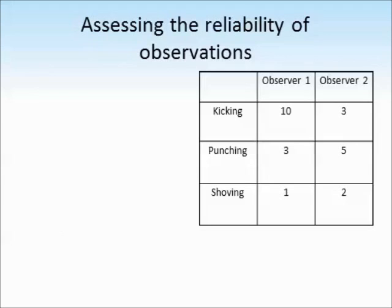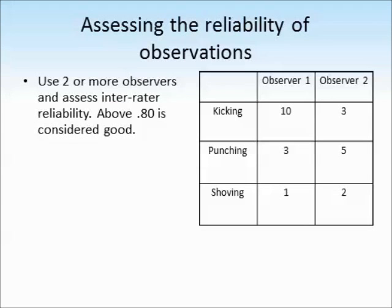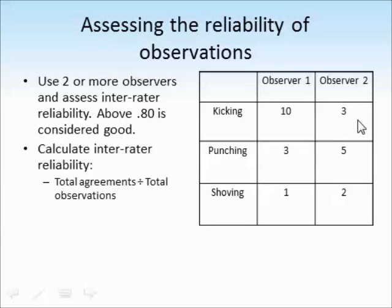It's important in observational studies that we make sure the observations of each person observing are consistent and reliable. One way to do this is to use two or more observers watching exactly the same thing and see how much they agree on each event. Here is a table of observational results looking at three different behaviours with two observers. Watching the same child, observer one recorded ten incidents of kicking, but observer two only observed three. With punching and shoving, there's not much agreement either.